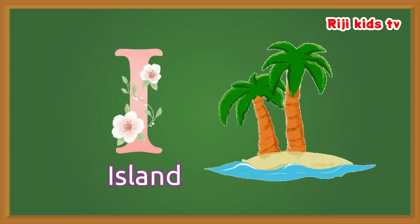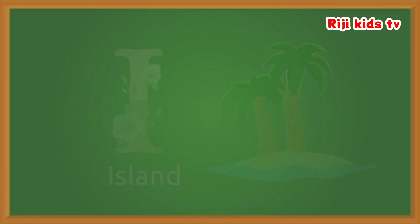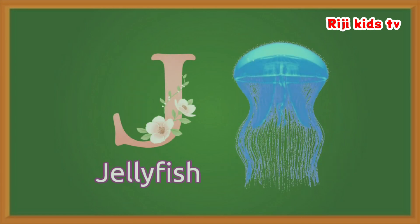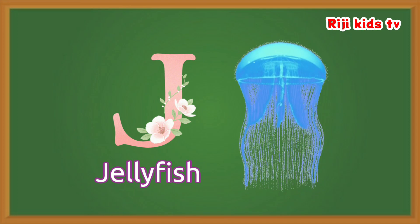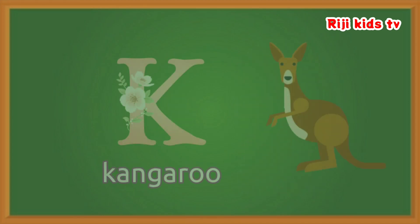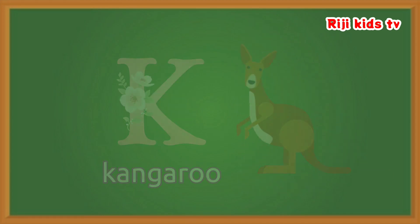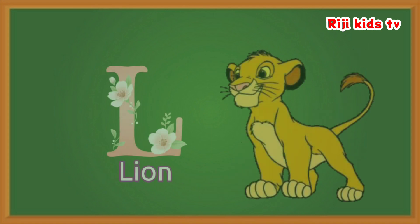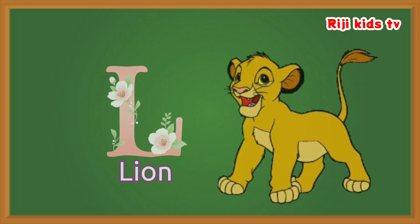I. I for island. J. J for jellyfish. K. K for kangaroo. L. L for lion.